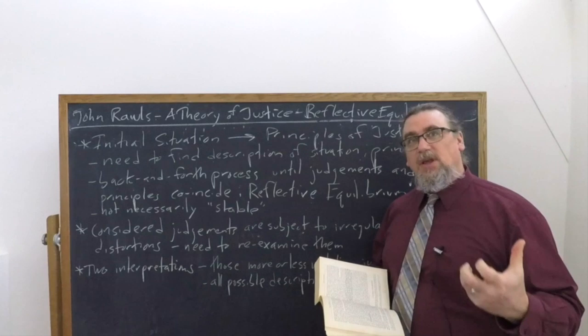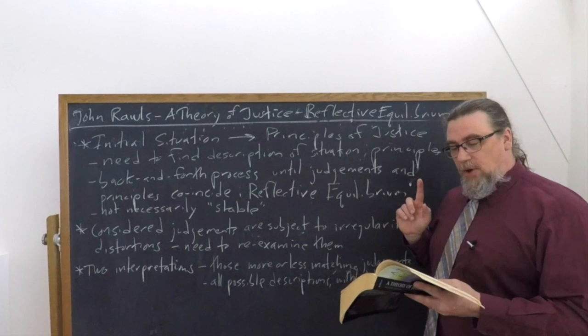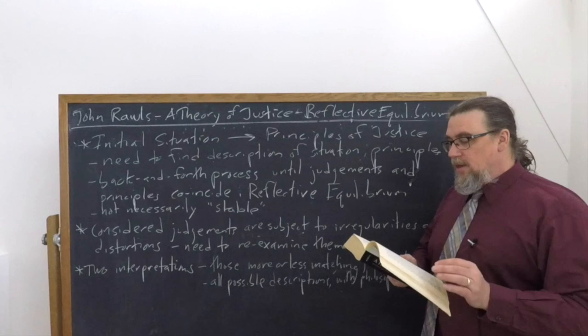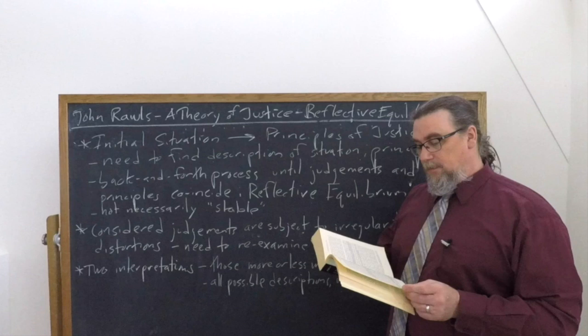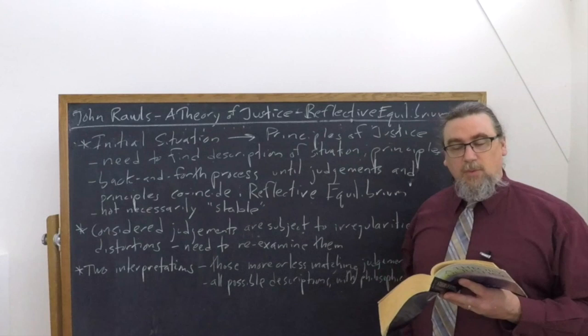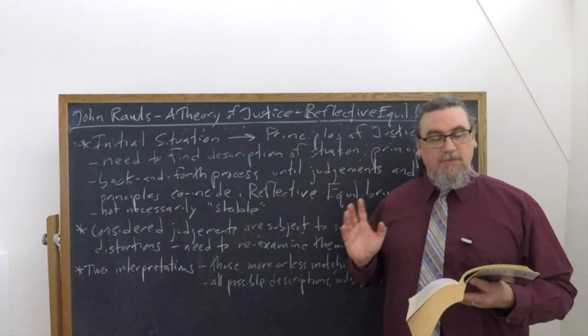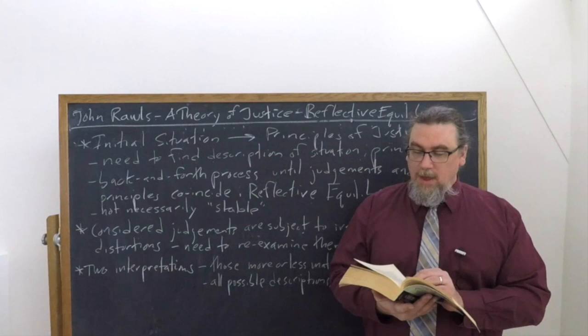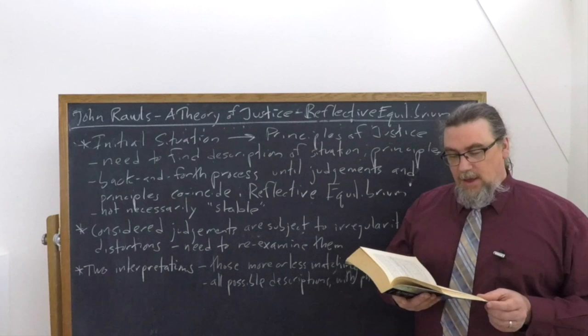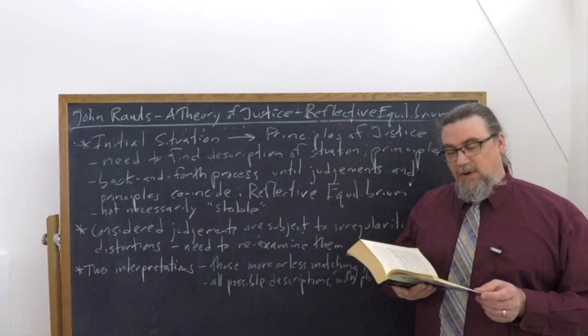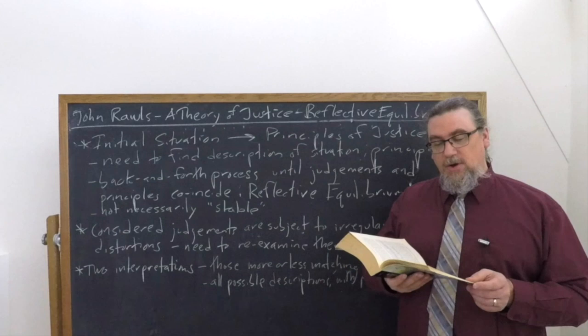A little bit later on in chapter nine, in some remarks about moral theory, Rawls brings up reflective equilibrium again. He says the need for this idea arises as follows, according to the provisional aim of moral philosophy — which he's called the attempt to describe our moral capacities, our abilities to make good judgments. According to the provisional aim of moral philosophy, one might say that justice as fairness is the hypothesis that the principles which would be chosen in the original position are identical with those that match our considered judgments. And so these principles describe our sense of justice.